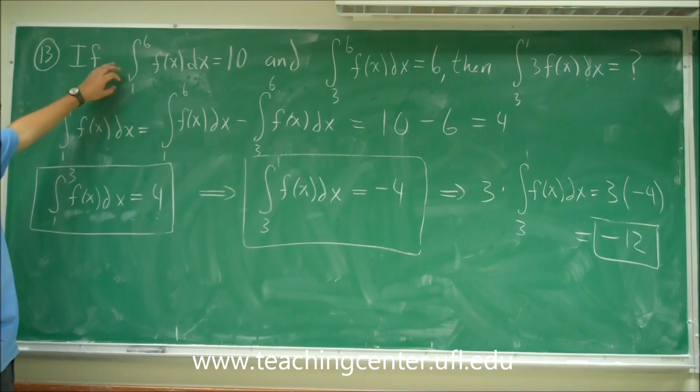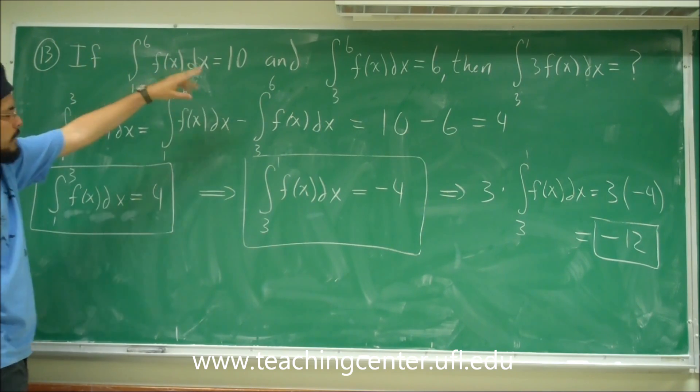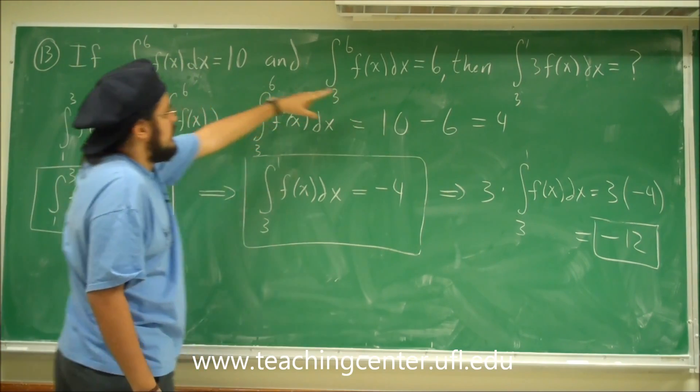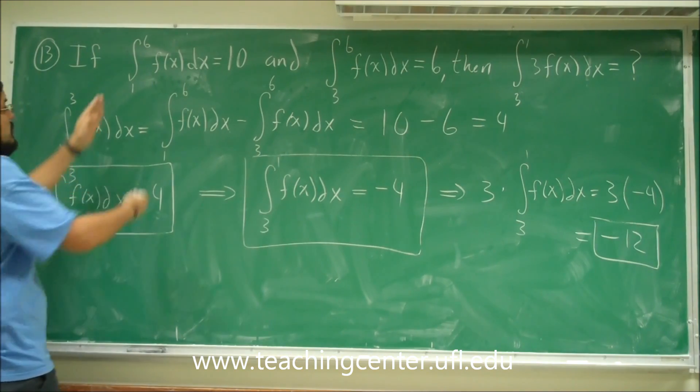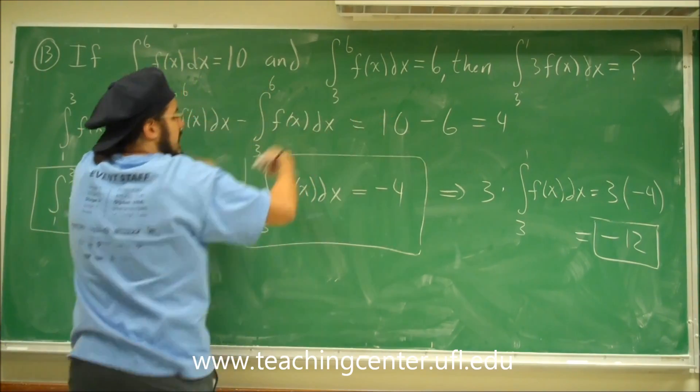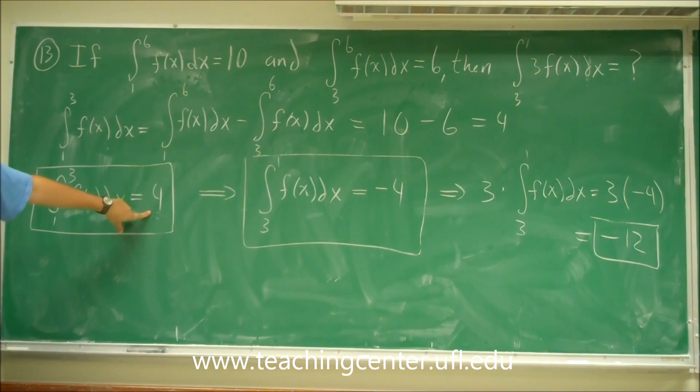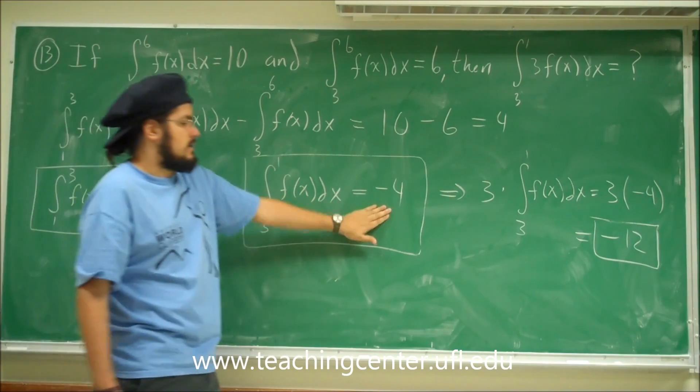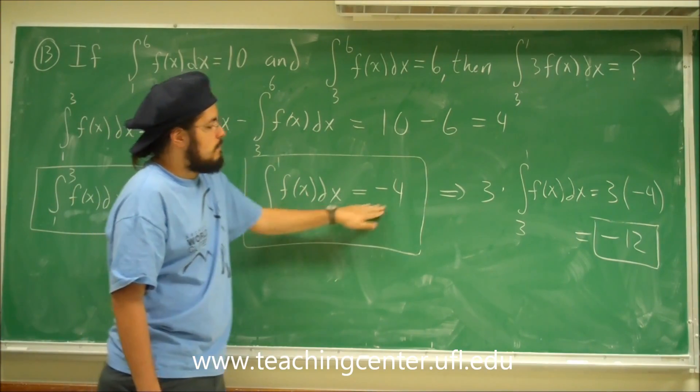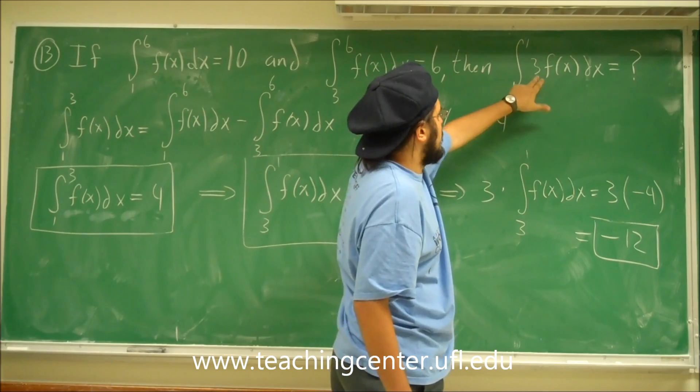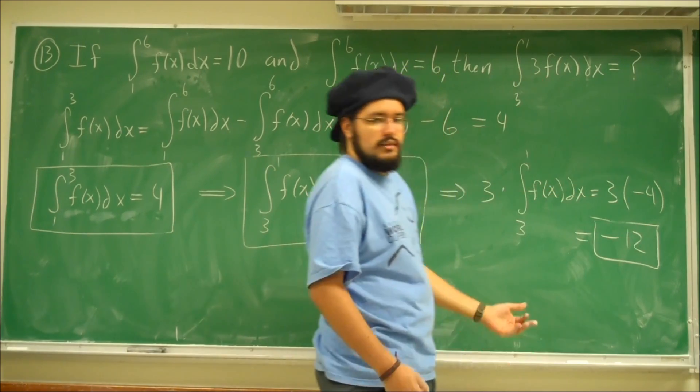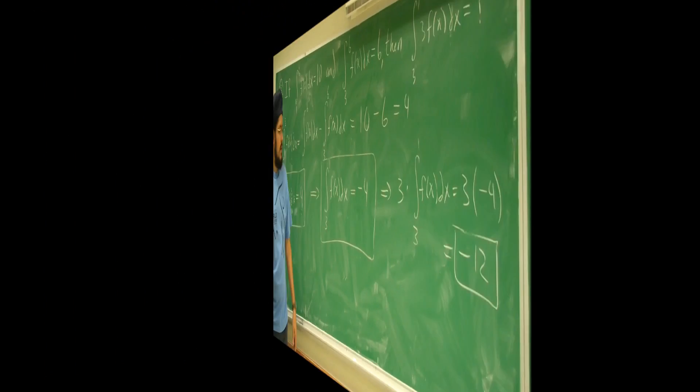Again, we know the area from 1 to 6 is 10 and we know the area from 3 to 6 is 6. So if we want to find the area from 1 to 3, just subtract this one by this one and we'll get 4. So then we have the area from 1 to 3 is 4. Now, if you switch from 1 to 3 and put it backwards from 3 to 1, that means you're going backwards, then you have the same 4 but it's going to be negative. Once you have that, multiply it by 3 because there's a constant 3 and 3 can be brought outside and you'll get 3 times negative 4 is negative 12. That's it.